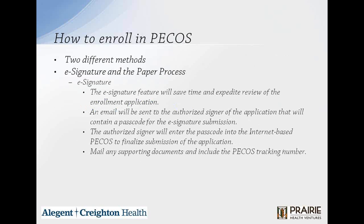There are two different methods: the e-signature or the paper process. The e-signature feature will save you time and expedite the review of the enrollment application. An email will be sent to the authorized signer containing a passcode for the e-signature submission. The authorized signer will then enter the passcode into internet-based PECOS to finalize the submission. You need to mail any supporting documents and include the PECOS tracking number.